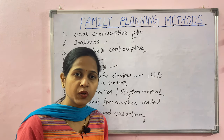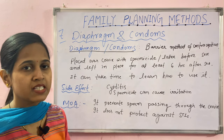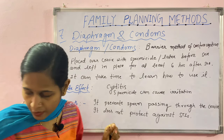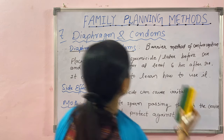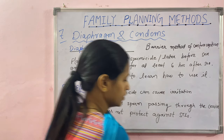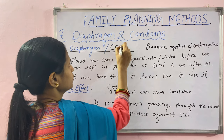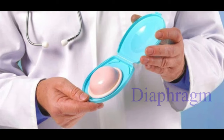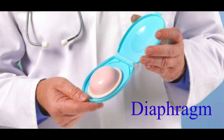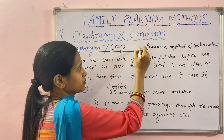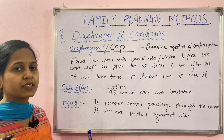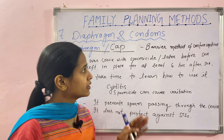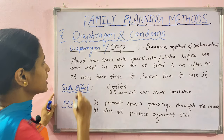Let's start with the diaphragm. This is the seventh method of contraception. The diaphragm is also called a cap — diaphragm and cap are the same thing. Let's first look at a photo of the diaphragm and cap. The diaphragm is a barrier method of contraception, meaning it creates a barrier between sperm and egg meeting.